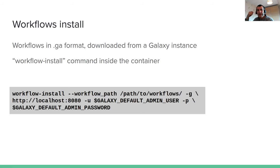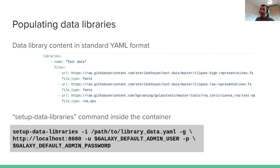The workflows will be installed into your Galaxy instance and made available for users. You can also populate data libraries — you just need to write a YAML file with a standard format specifying different sections, the URL to fetch files from the internet, and the data types for each file. Once you've written this YAML file, you run the setup-data-libraries command, which is quite simple.